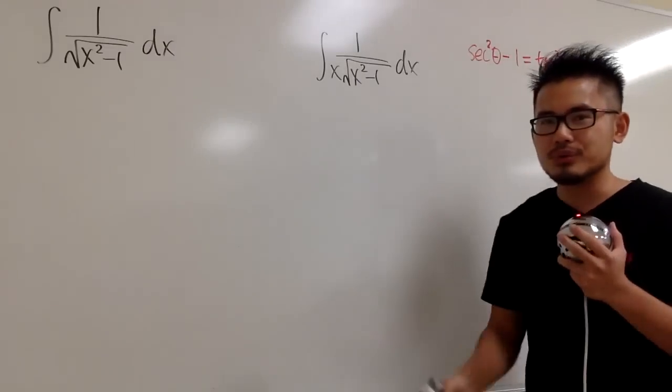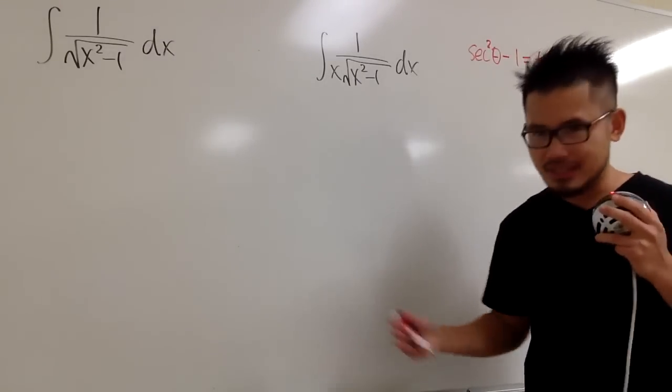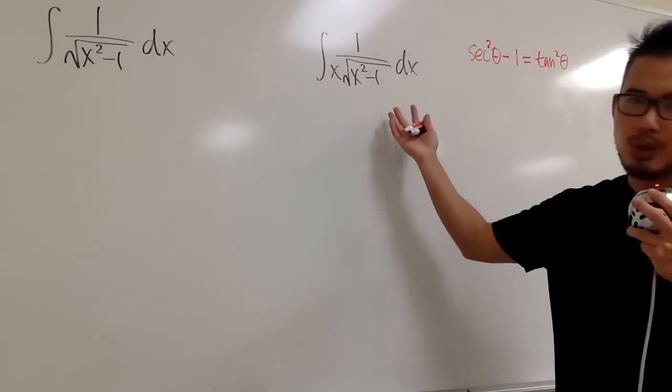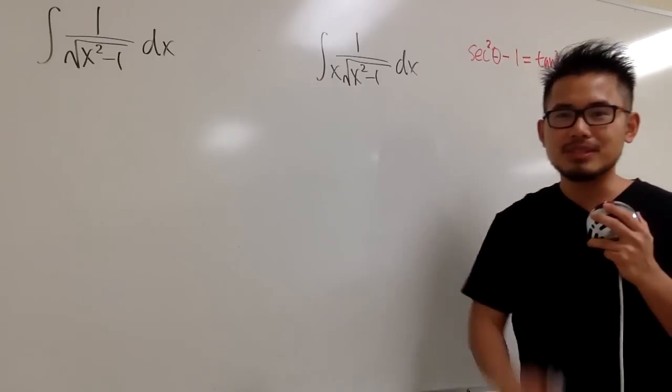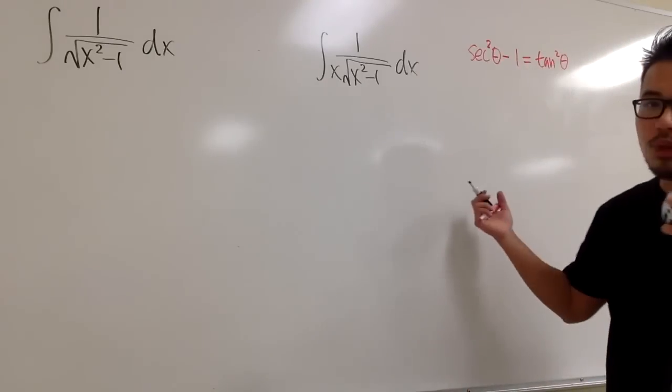And if we put this back to the square root, square root and square cancel each other out. That's very nice, right? So you guys all know this. This is the trick substitution. Anyways, without further ado,